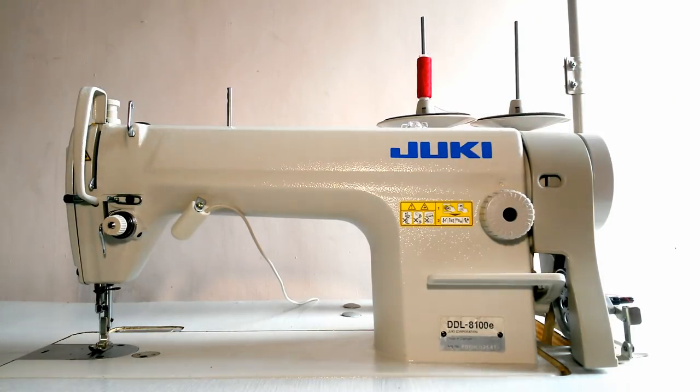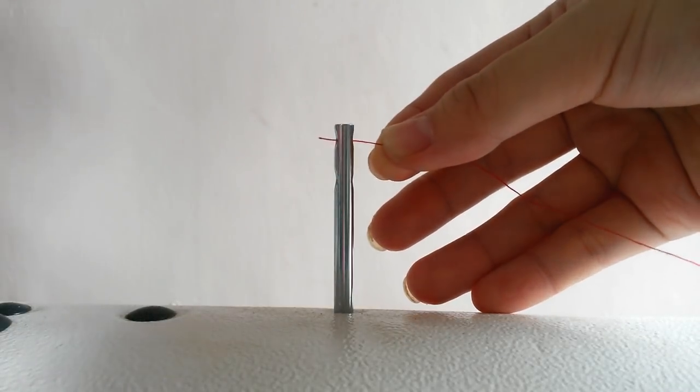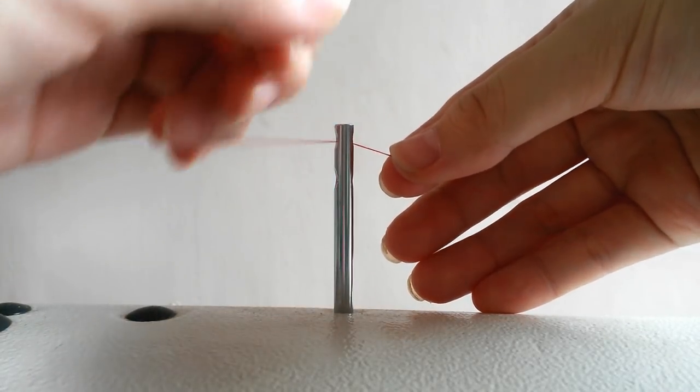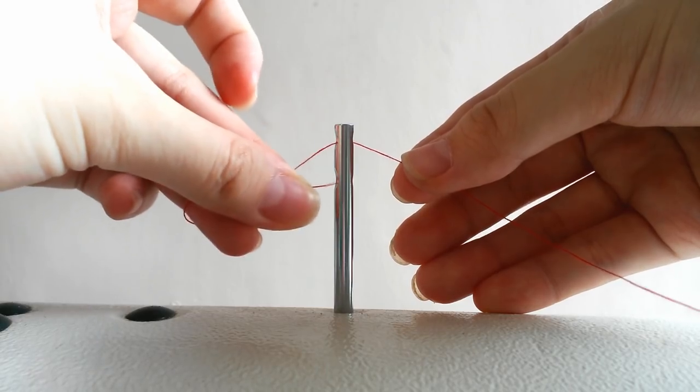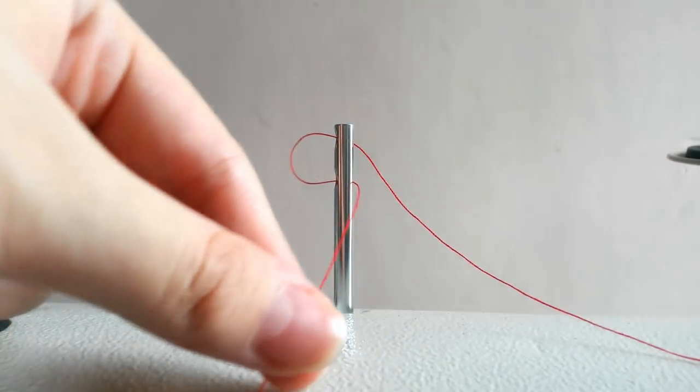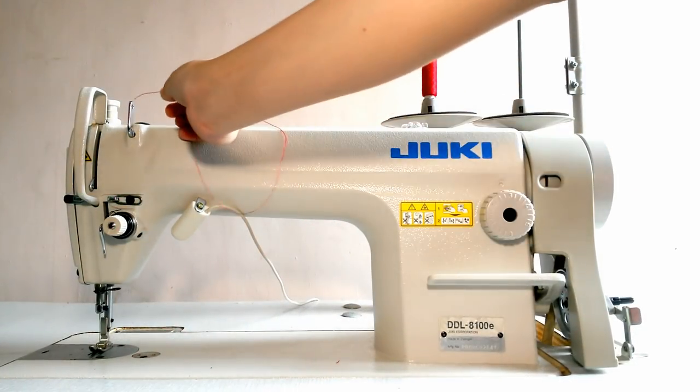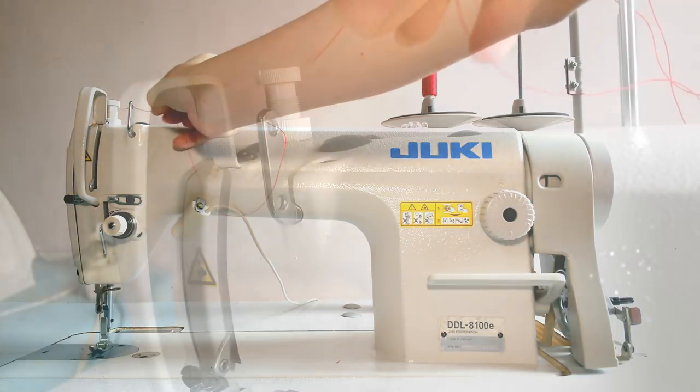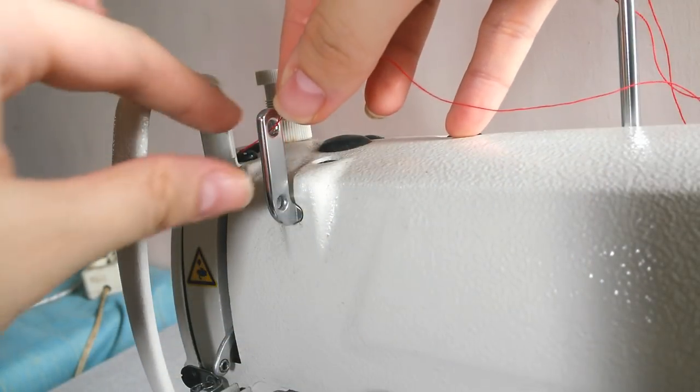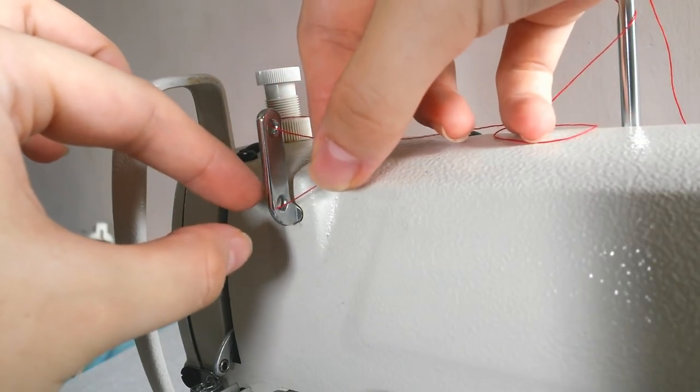Put the thread to the left thread stand and into the small hole like the previous early step. Then it goes to these two holes. Continue here, always in from the right side for these two holes.